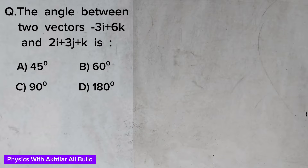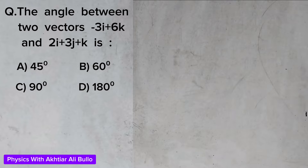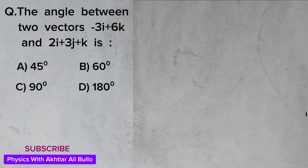The question is: find the angle between two vectors, minus 3i plus 6k and 2i plus 3j plus k. The options are: a) 45 degrees, b) 60 degrees, c) 90 degrees, d) 180 degrees. To find the angle, we will use a formula.